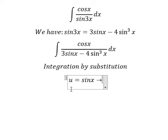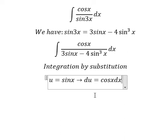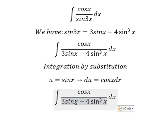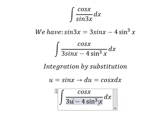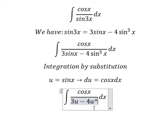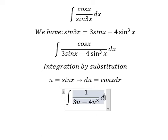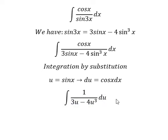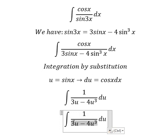We need to take the first derivative of both sides, so du equals cosx dx. Next we substitute: cosx dx becomes du, and we can factor the denominator as 3u minus 4u³, which factors to u(3 - 4u²).